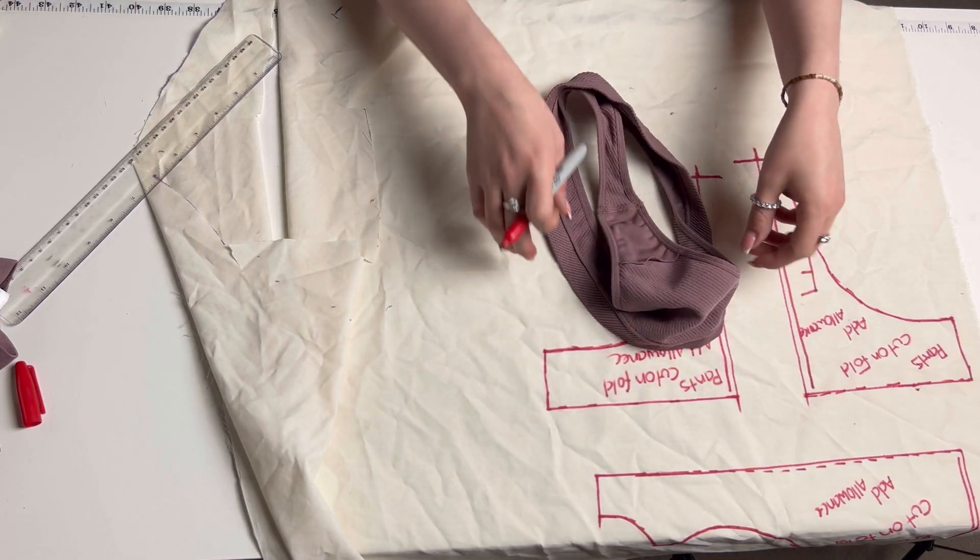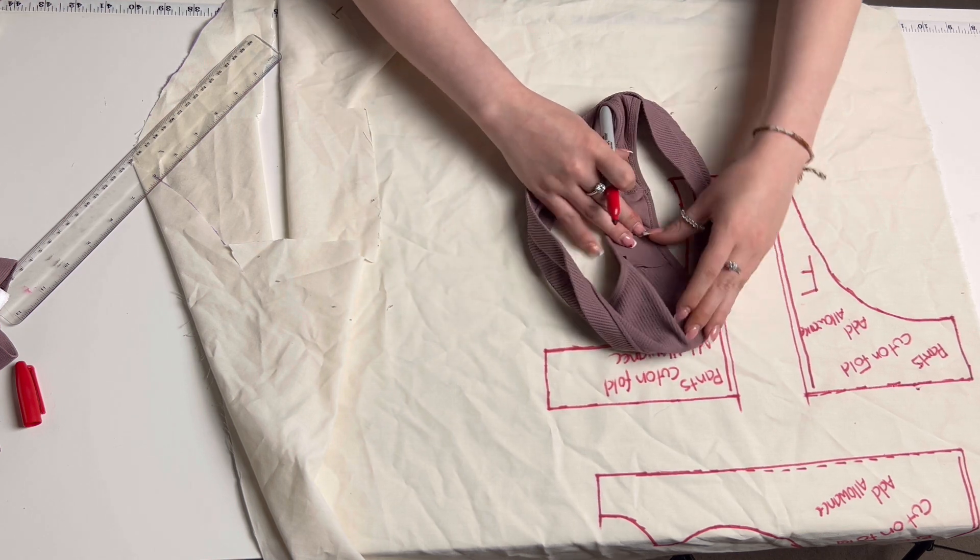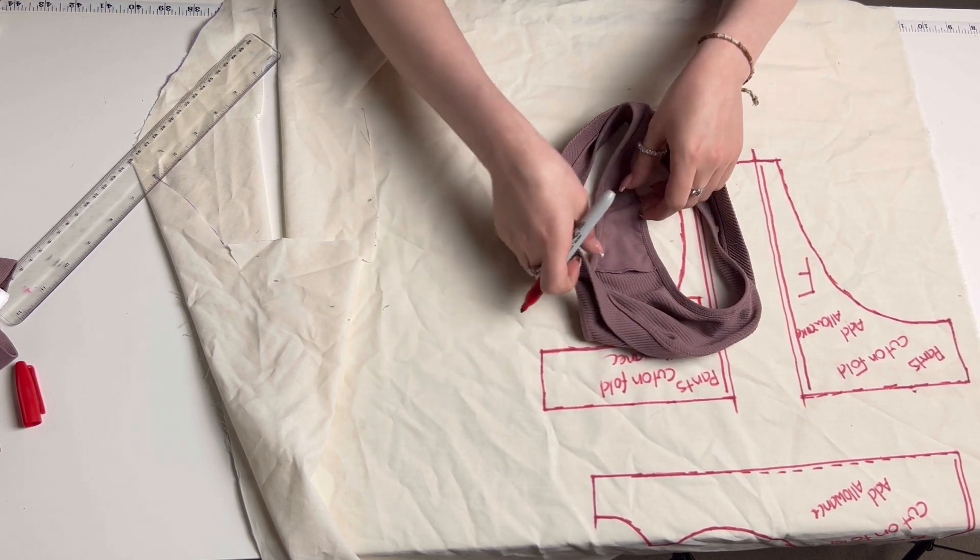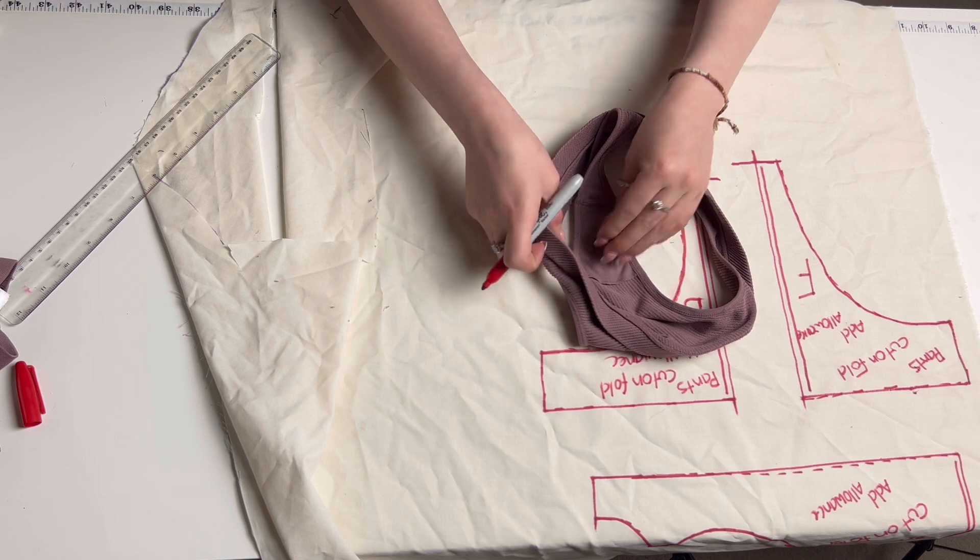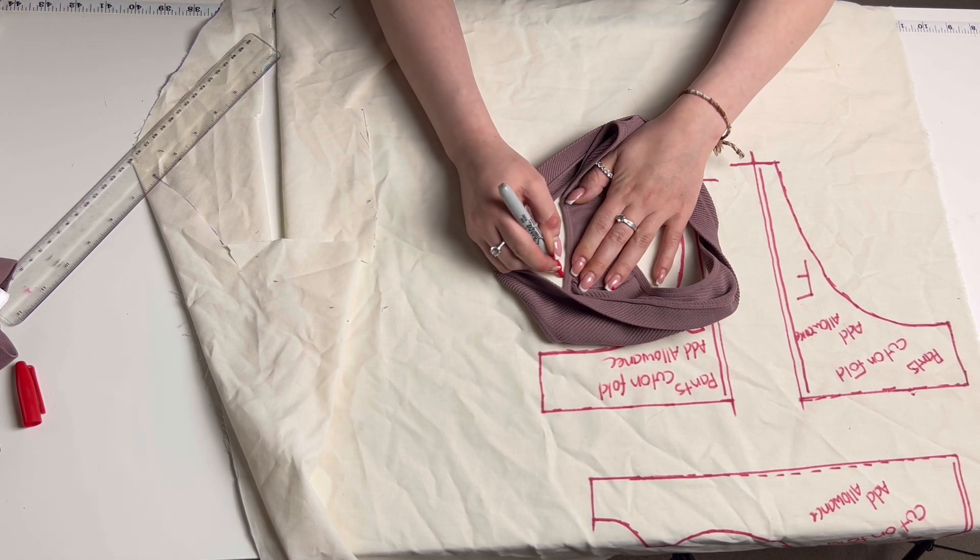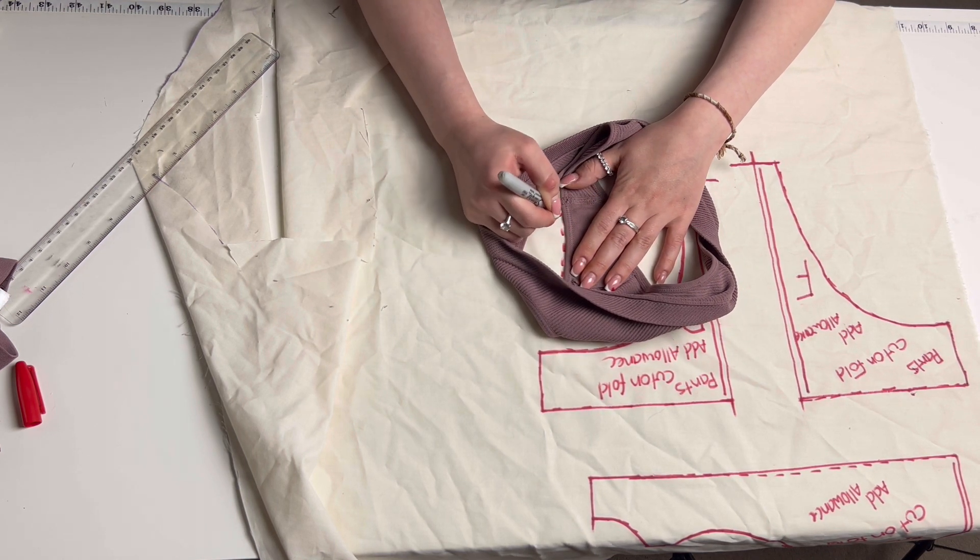Now the last piece of your pattern is we need to make a gusset. Most pants just have a gusset on them, so we need to make sure we make that in our pattern. So just start by laying that out onto your fabric and just slowly tracing round it.